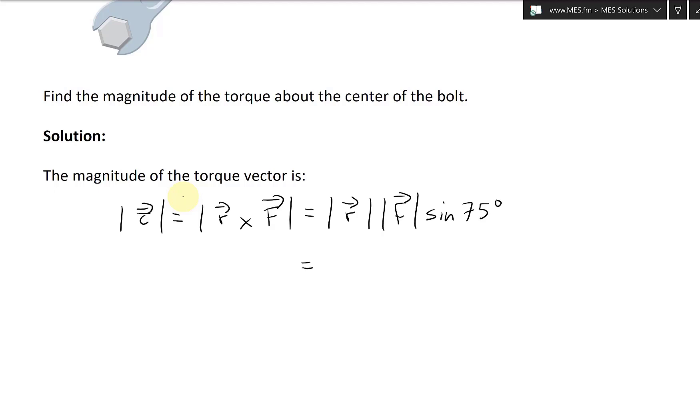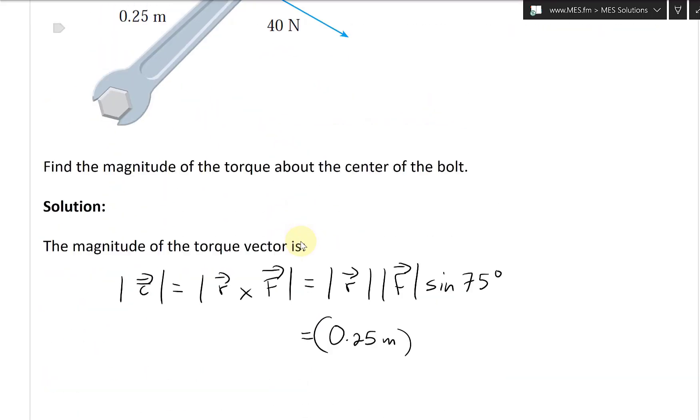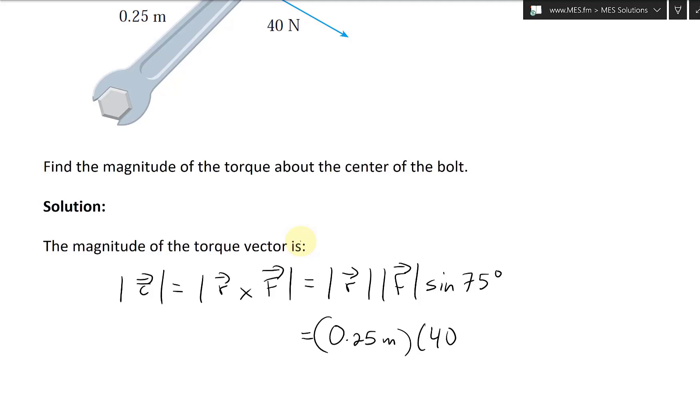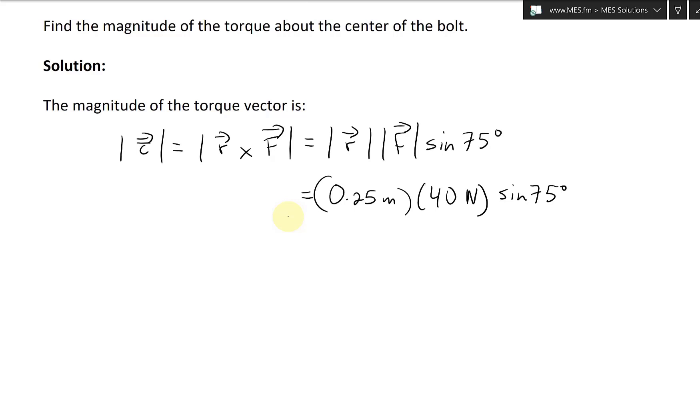And then if you plug this in, well, let's put everything in. So the distance is .25 meters. And then the force is 40 Newtons. See that up here? So .25 meters, 40 Newtons. This is going to be 40 Newtons. And then sine 75. And then if you solve this again, this .25, that's just 1 over 4 times by 40. That's going to be 10, equals to 10, sine 75. Let's get this better.